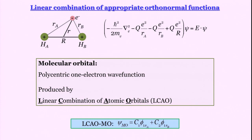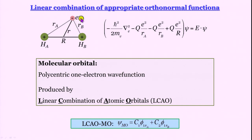In this lecture we are going to complete our discussion of molecular orbital theory of H2 plus, the dihydrogen cation. We have written down the Hamiltonian: minus h-cross-squared by 2m_e times del-squared is the kinetic energy term of the lone electron; minus q_e-squared by r_a and minus q_e-squared by r_b are the potential energy terms for attraction of the electron by the two nuclei; and q_e-squared by capital R, the internuclear separation, is the term for internuclear repulsion.